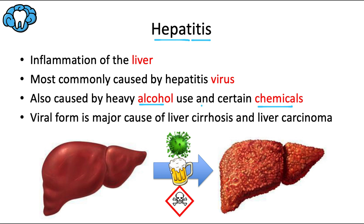Chronic viral hepatitis is also the major cause of liver cirrhosis, or scarring of the liver, and liver carcinoma, or cancer. So all of these things — the hepatitis virus, alcohol, and certain chemicals — can turn a healthy liver into one that looks like this.